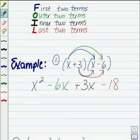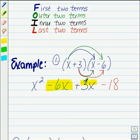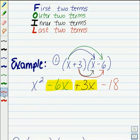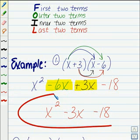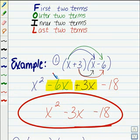Now I can combine together any like terms, and oftentimes your outers and your inners will go ahead and combine, giving us our final answer: X squared minus 3X, because negative 6X plus 3X combines to be negative 3X, minus 18. And that would be the product of these two binomials.